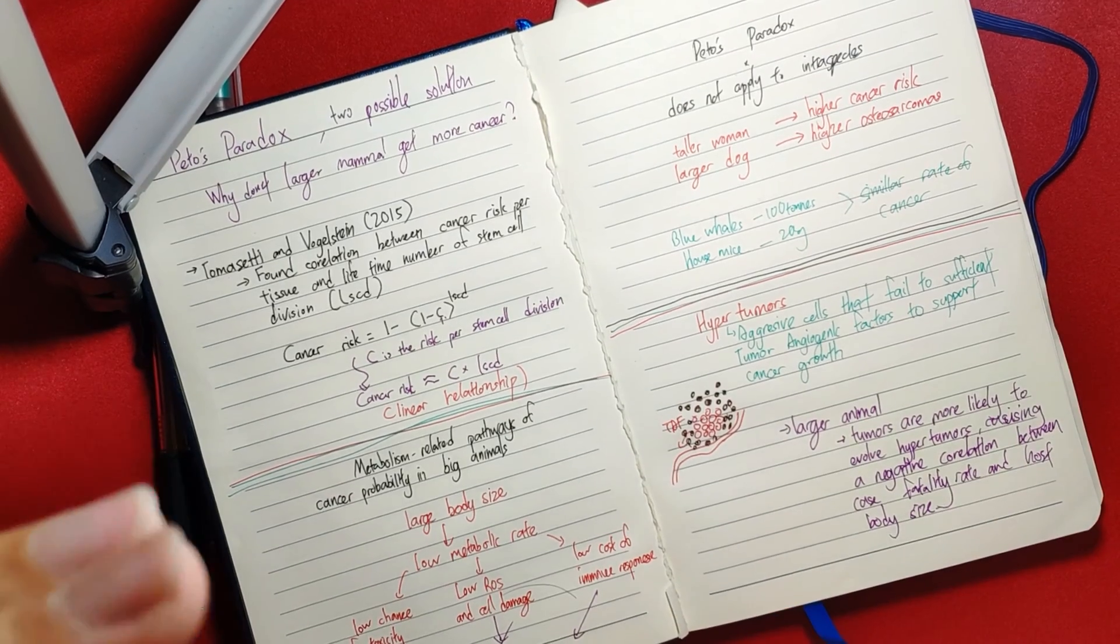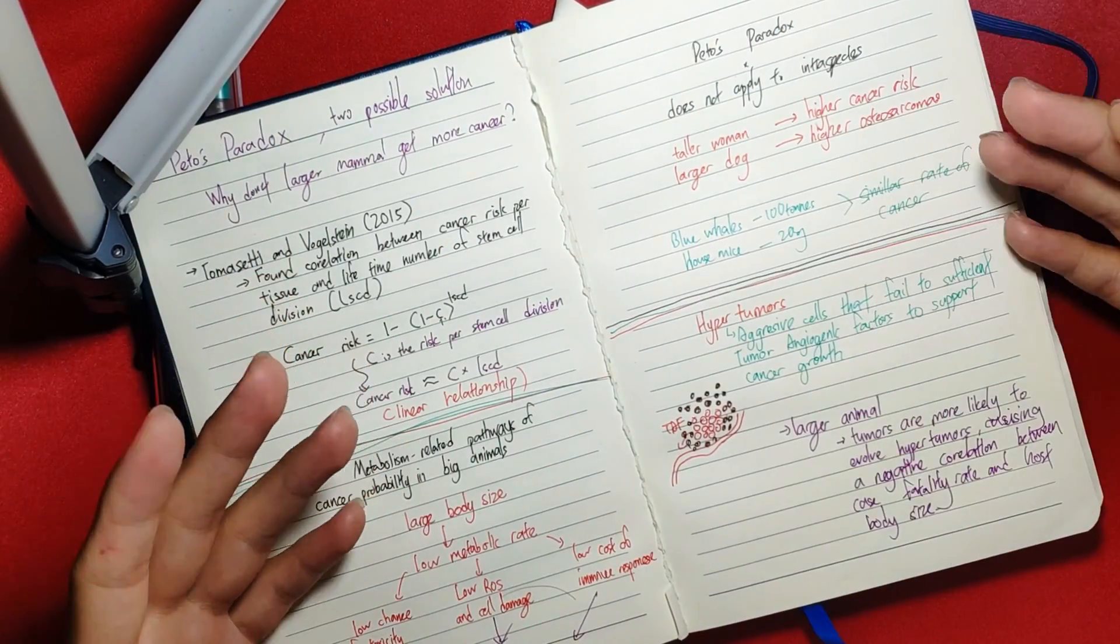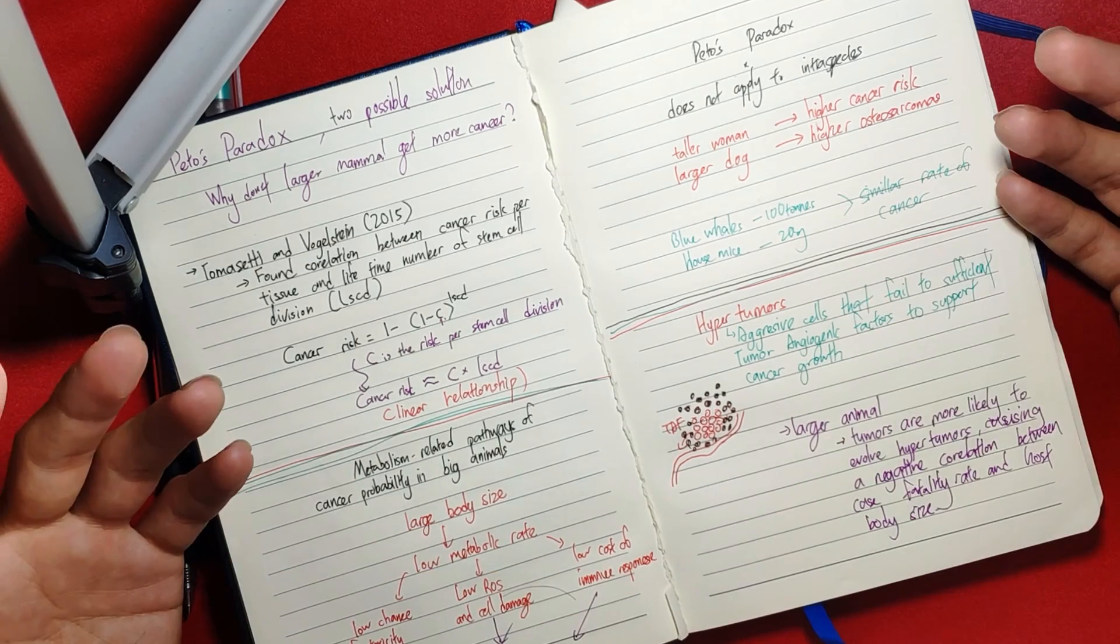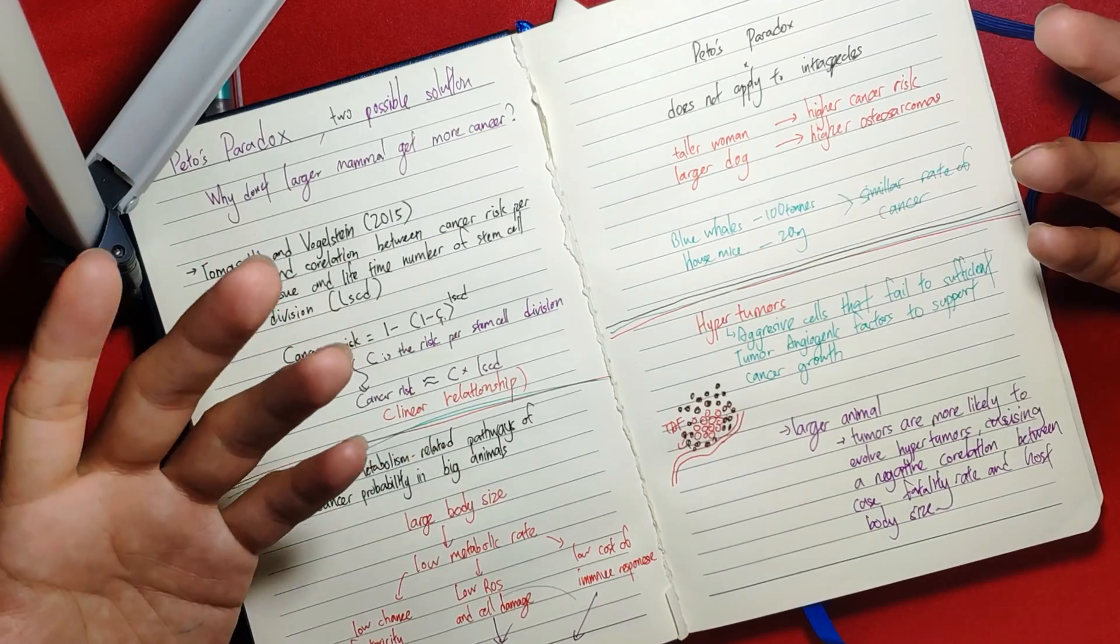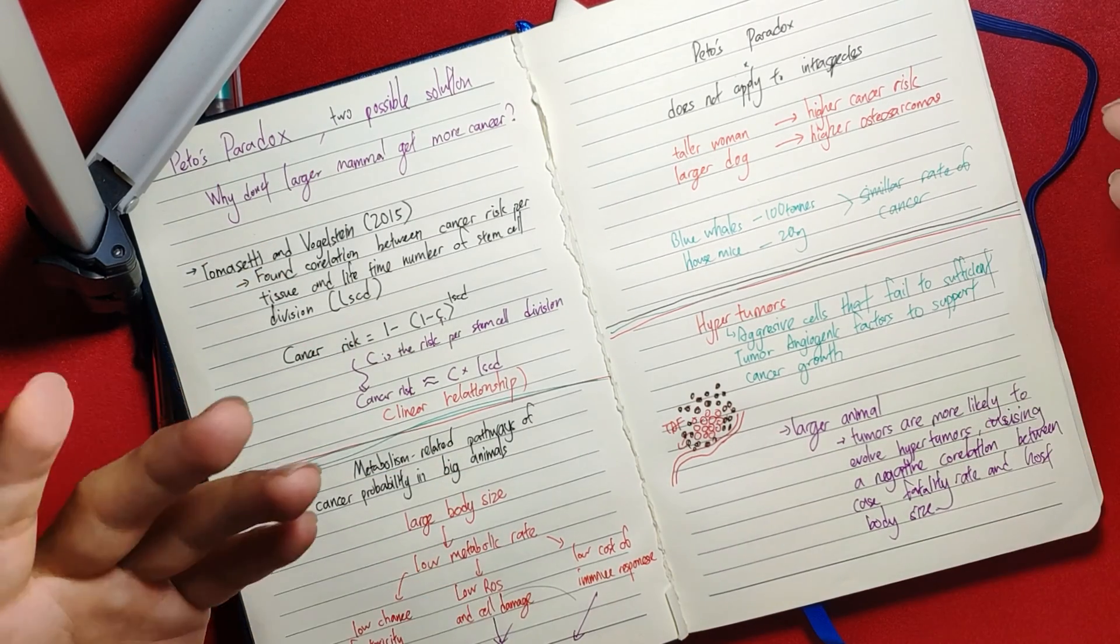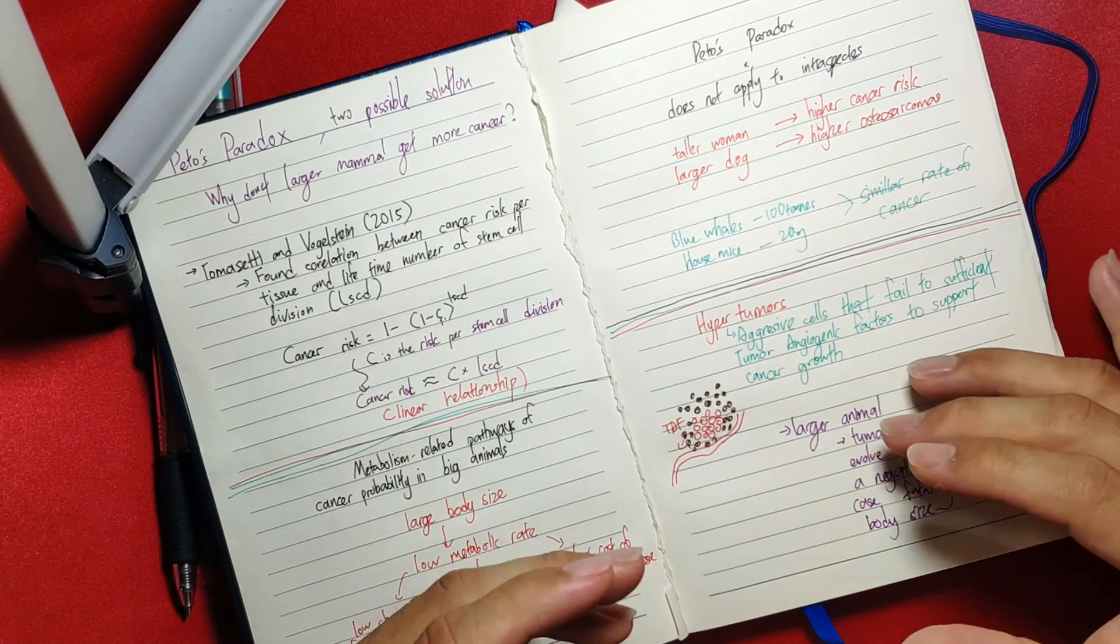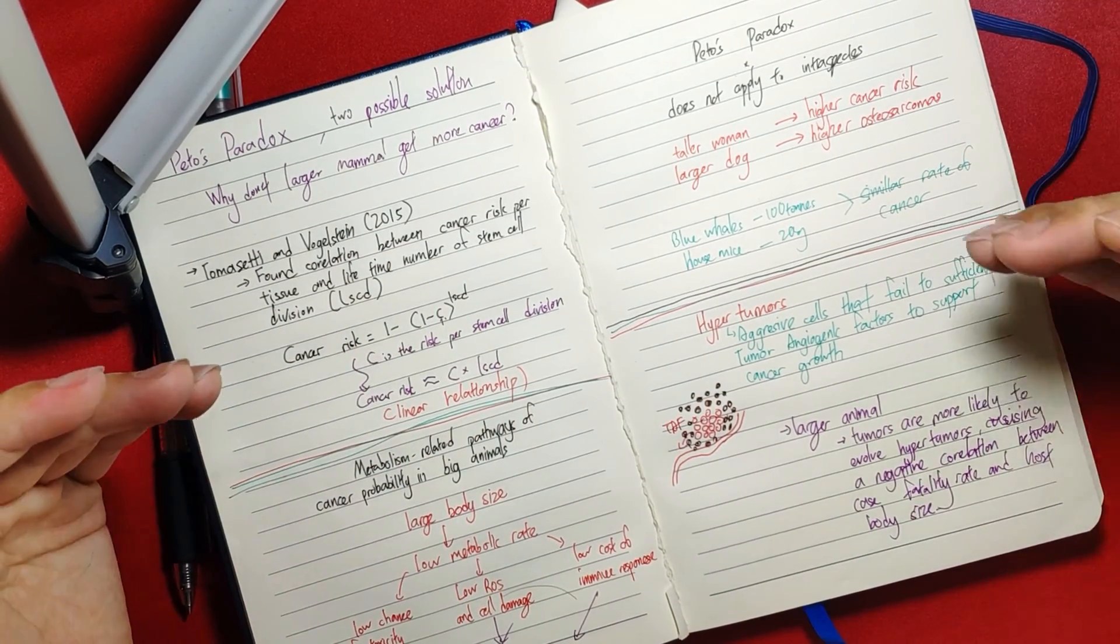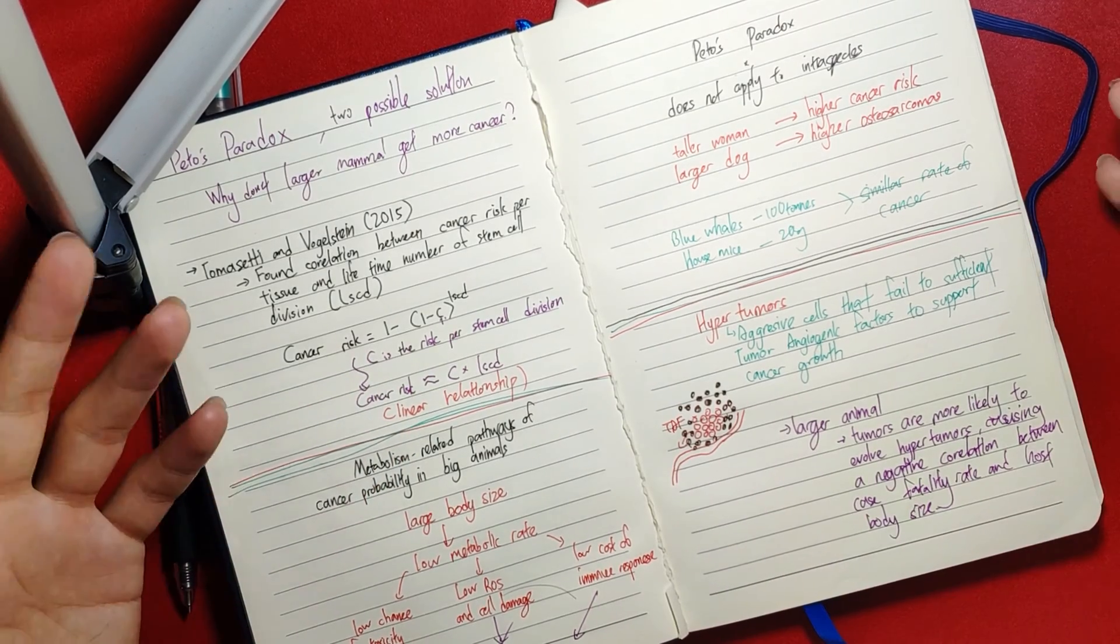One thing you might need to know is that Peto's Paradox does not actually apply to intra-species. We have found that taller women usually have higher cancer risk, and larger dogs usually have higher osteosarcoma, which is cancer of the bone.